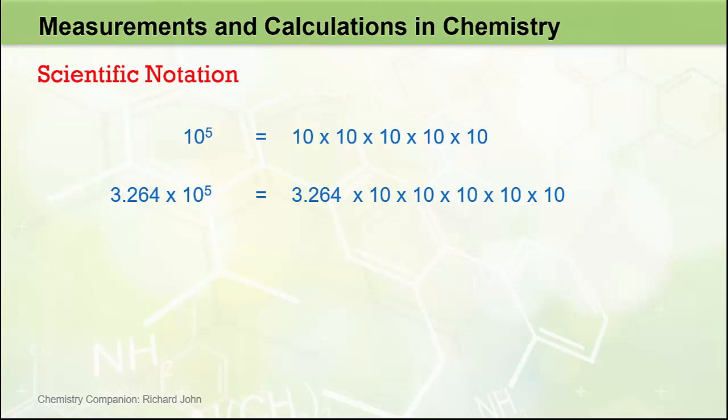So 3.264 × 10 to the 5 actually means 3.264 times 10 × 10 × 10 × 10 × 10, and if we plug those numbers into our calculator, we get the number 326,400. That number is said to be expressed in decimal form, as opposed to scientific notation.